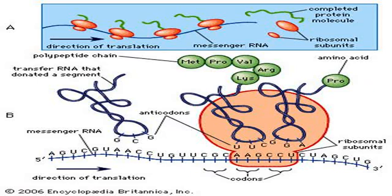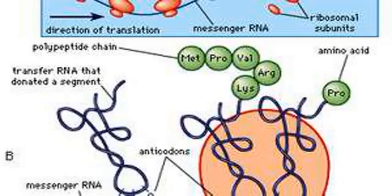mRNA is created during the process of transcription, where an enzyme converts the gene into primary transcript mRNA. This pre-mRNA usually still contains introns, regions that will not go on to code for the final amino acid sequence. These are removed in the process of RNA splicing, leaving only exons.